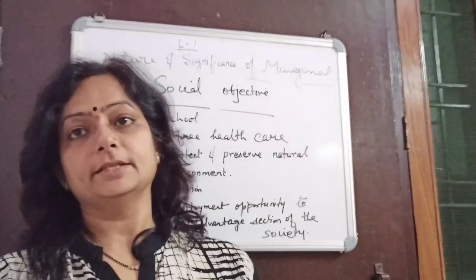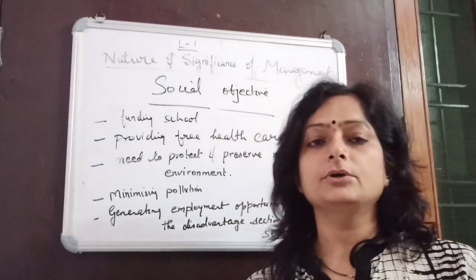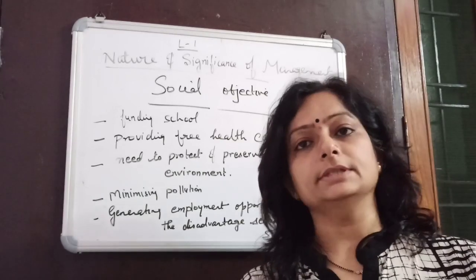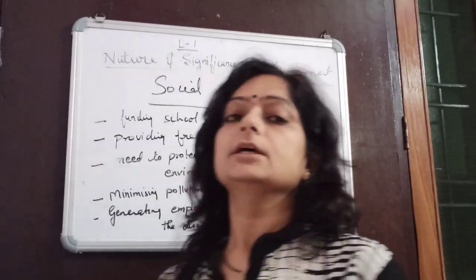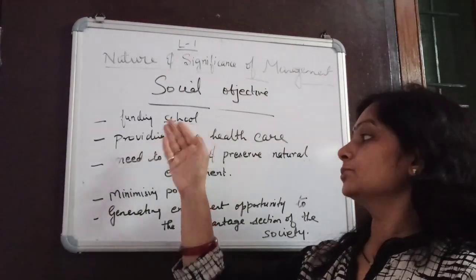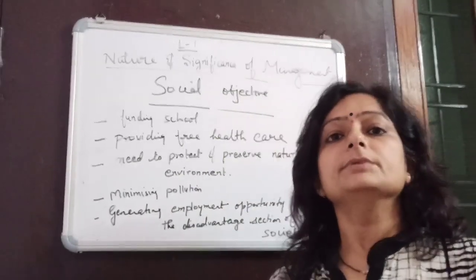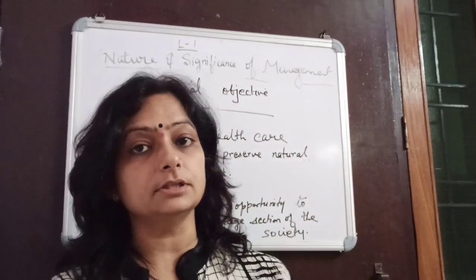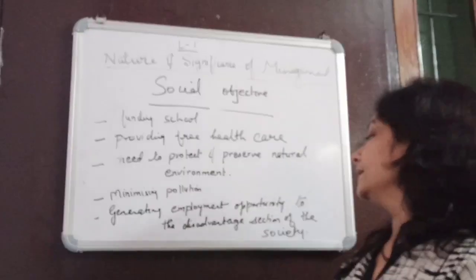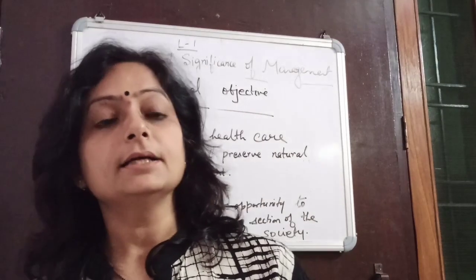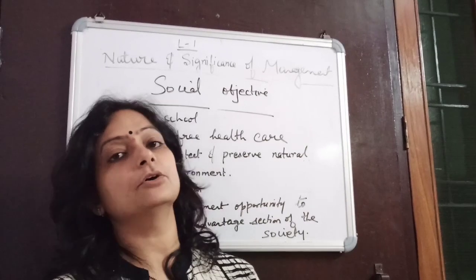Next is the social objective. Every company has a societal obligation to fulfill, and these go much beyond directly adding to society. Social objectives include funding schools, providing free healthcare, protecting and preserving the natural environment, providing employment opportunities to the disadvantaged sections of society, and minimizing pollution by using environment-friendly methods of production.